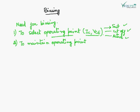The second need for biasing is to maintain the operating point that was selected earlier. The third need for biasing is to avoid thermal runaway. Now we will discuss what thermal runaway is.